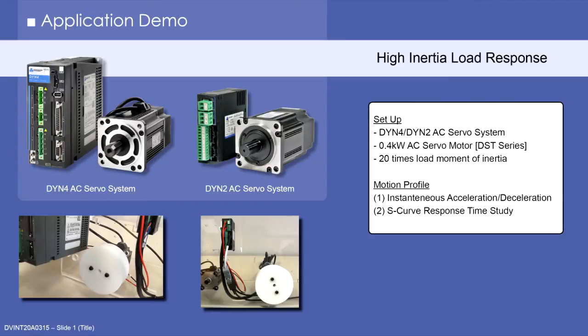In this application demo, we will look at the low voltage DYN2 and high voltage DYN4 servo system paired with a 400 watt DST servo motor. The load will be a rotary apparatus with 20 times load inertia.